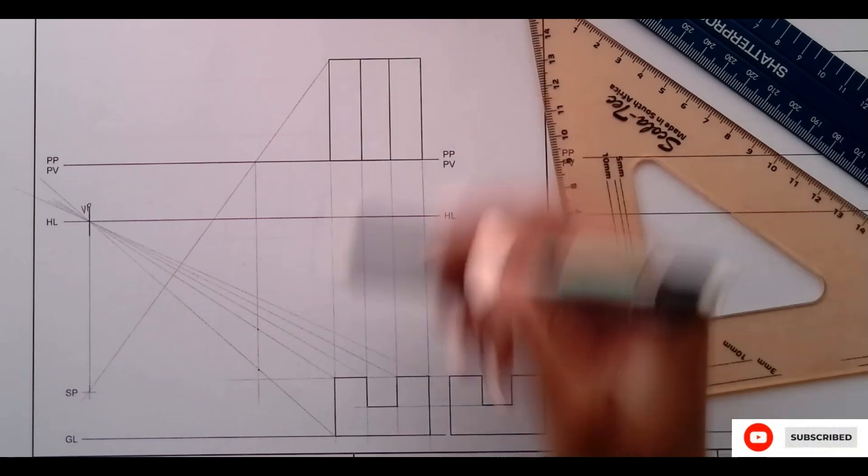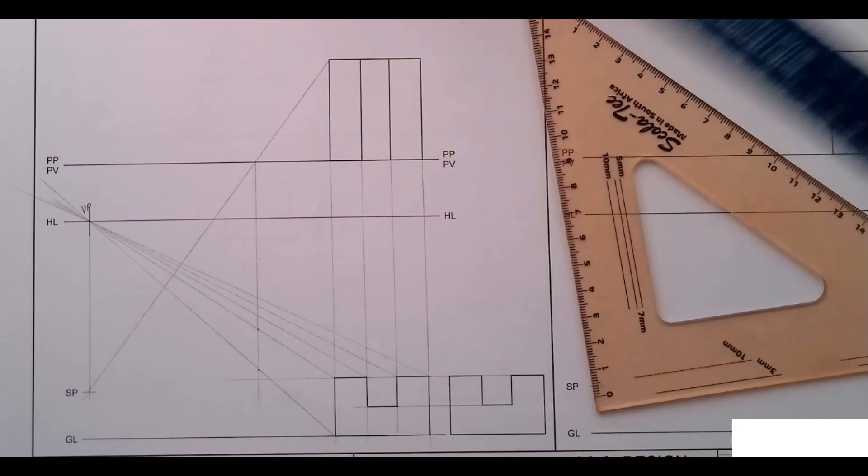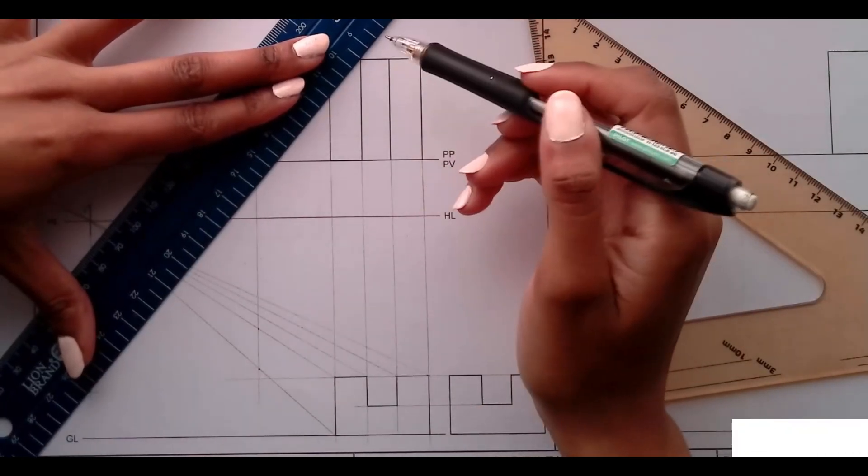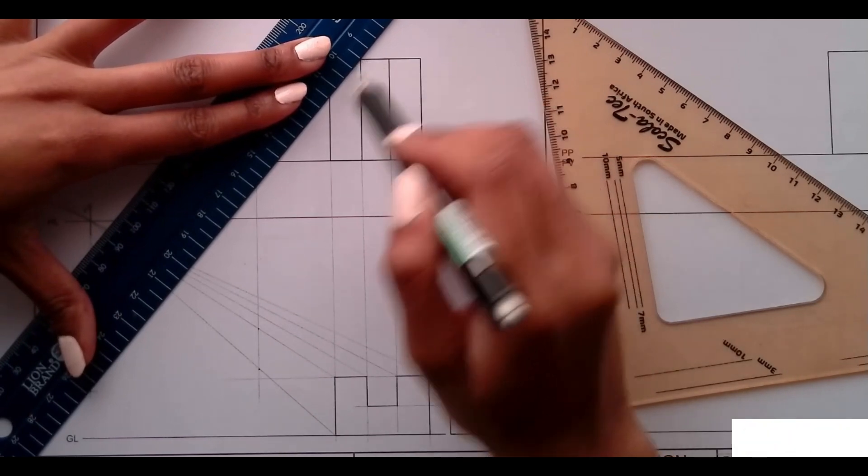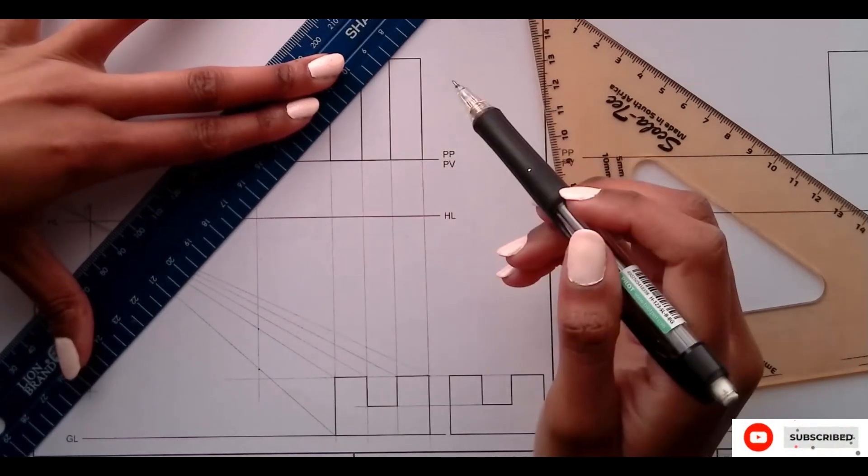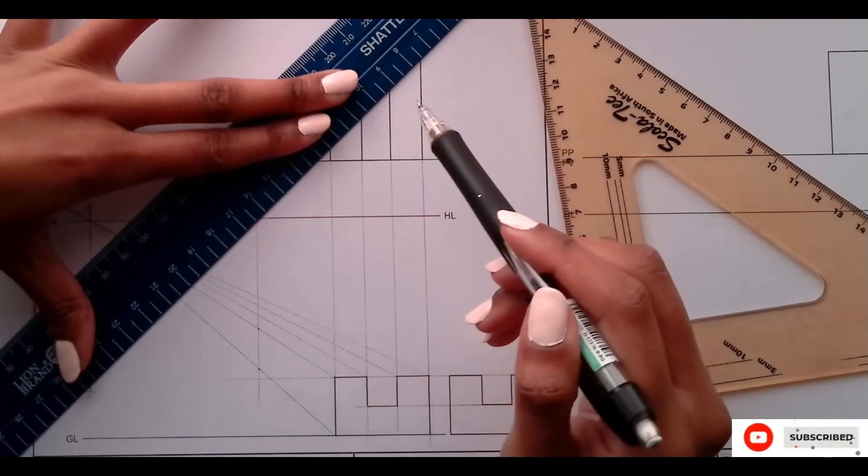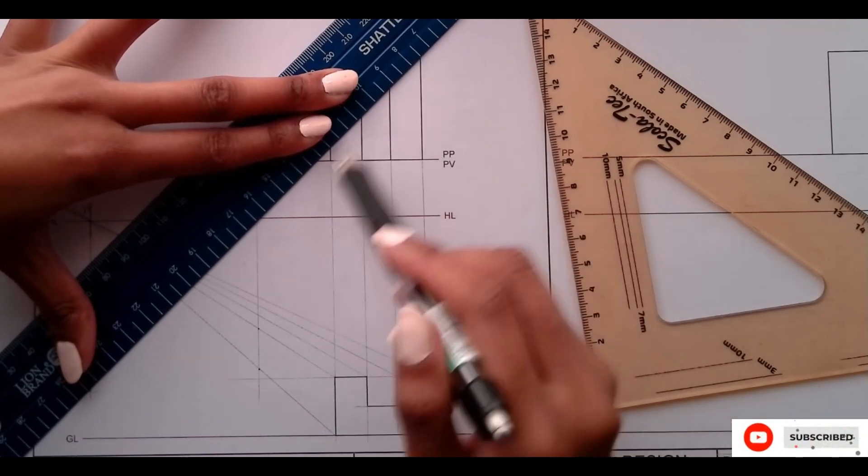Then now to close it off at the back, we have this one here. Just align it. Then I'm just going to do the same for all the remaining points. Just aligning to it and taking it to the picture plane.